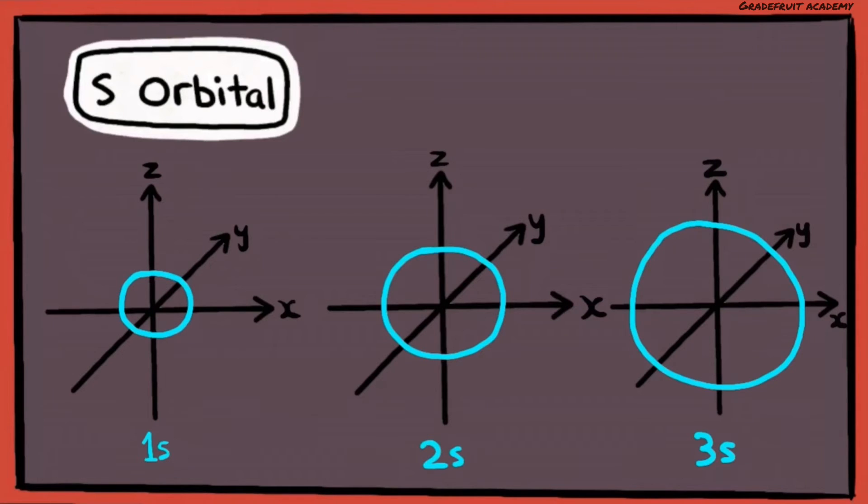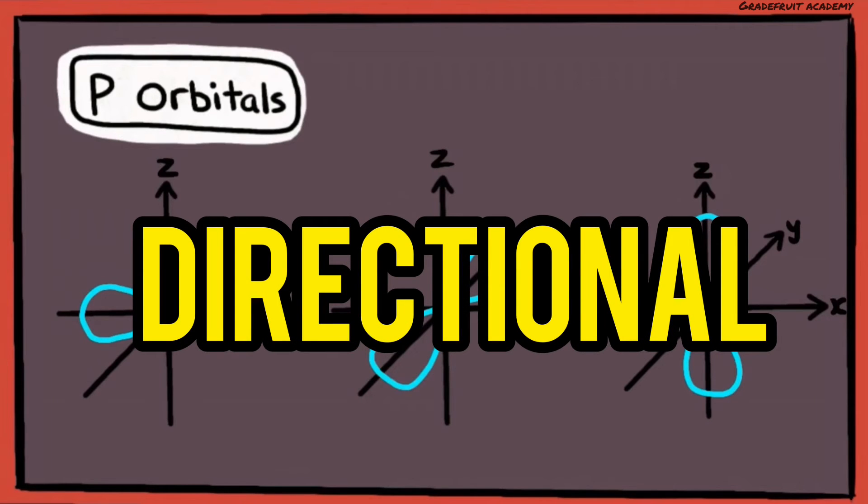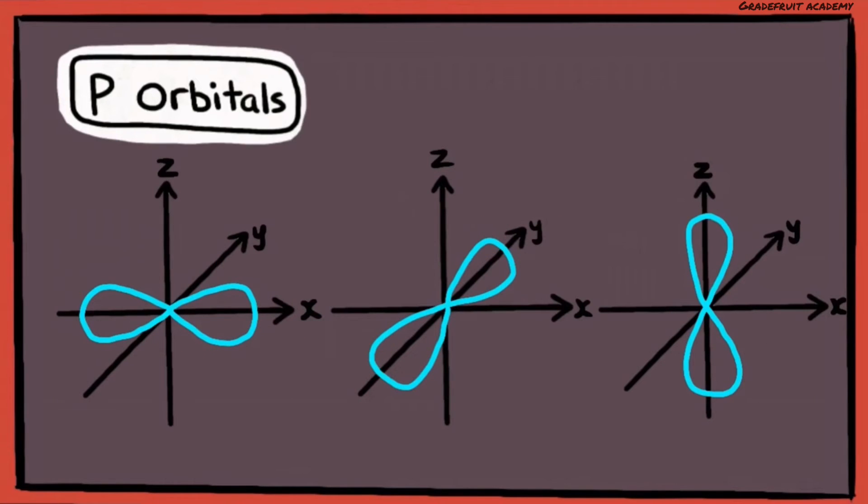This is the opposite of the P orbitals present in P subshells, which are directional because they are dumbbell in shape. Hence, the electron density is concentrated in certain directions along the X, Y, and Z axes. If the lobes lie on the X axis, it's called a PX orbital.